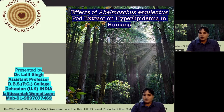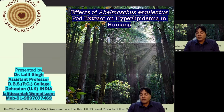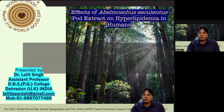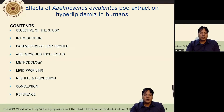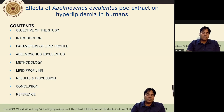The topic I have selected today is based on my work: the effect of Abelmoschus esculentus pod extract on hyperlipidemia in humans. This topic coincides with topic four, that is forest product utilization. I will be running through this work based on the following contents: objectives, introduction, parameters, details about Abelmoschus esculentus, methodology, lipid profiling, results, discussion, conclusion, and references.